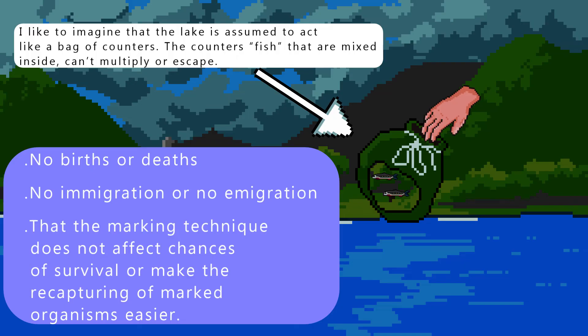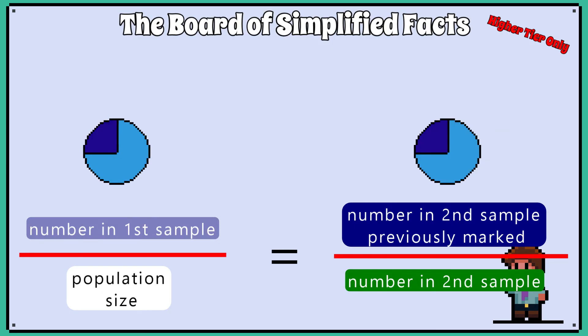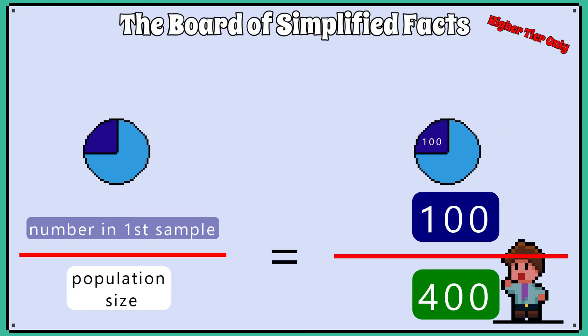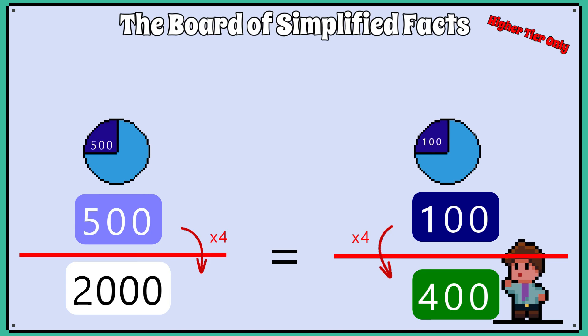For a bit of bonus info about that equation: the reason it works is because we look at our second catch and note that a quarter of the fish were marked — 100 out of 400. So we assume that those 500 fish we marked at the start make up one quarter of the whole lake population. We just multiply 500 by 4 to reverse the quarter, so to speak. Or we can think of it as: a quarter of 2,000 is 500. The written equation you are given is just a rearranged proportion.